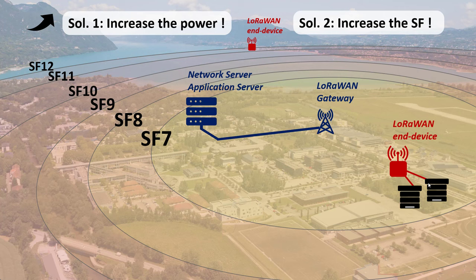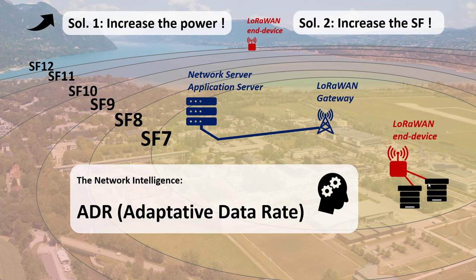When placing a device, you need to choose the right power and spreading factor to reliably reach your gateway without wasting energy. You could manually check the RSSI at the gateway and adjust, but that would take ages with many devices. Instead, you can use the network intelligence called ADR — Adaptive Data Rate. ADR is a small algorithm running on the network server that tells the device the optimal power and spreading factor for the best LoRaWAN transmission parameters, reaching the gateway without wasting power.